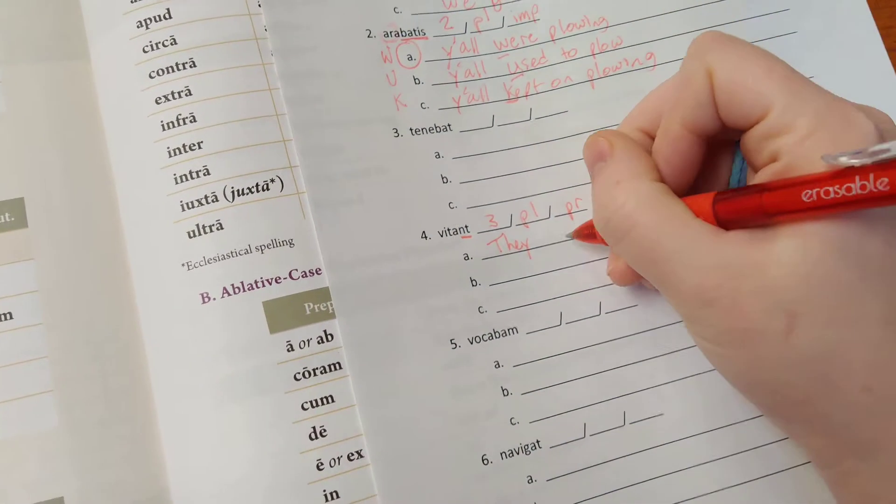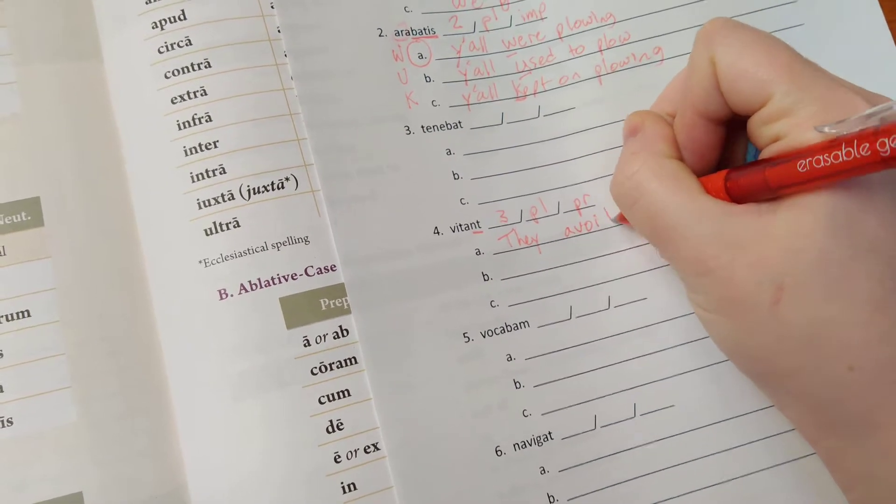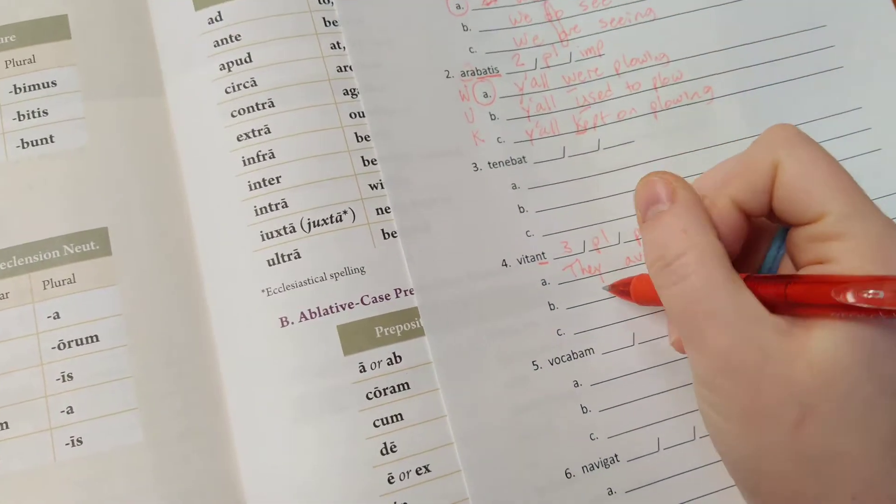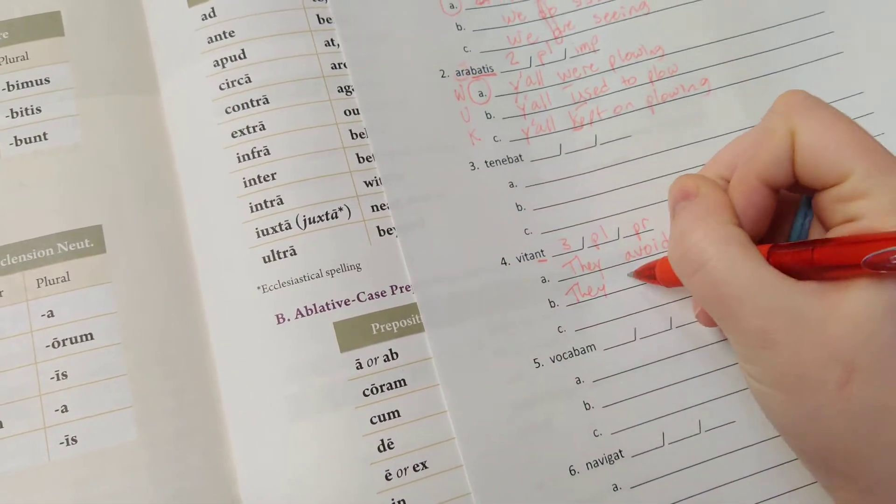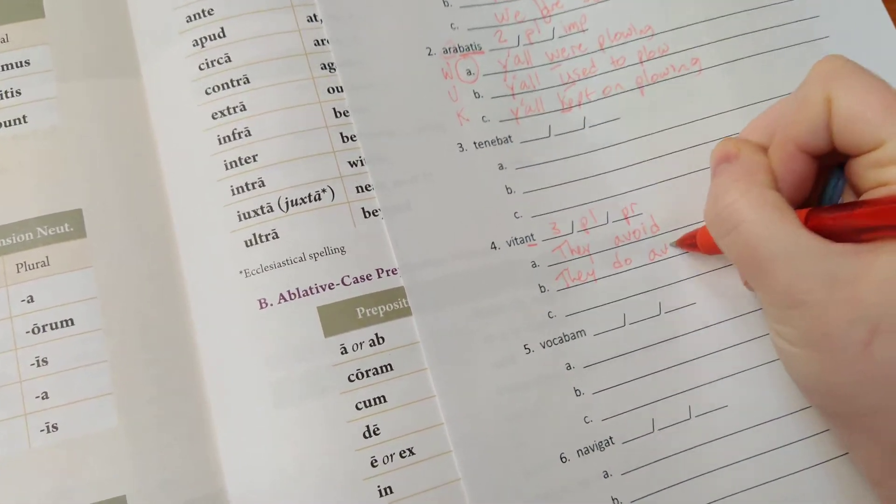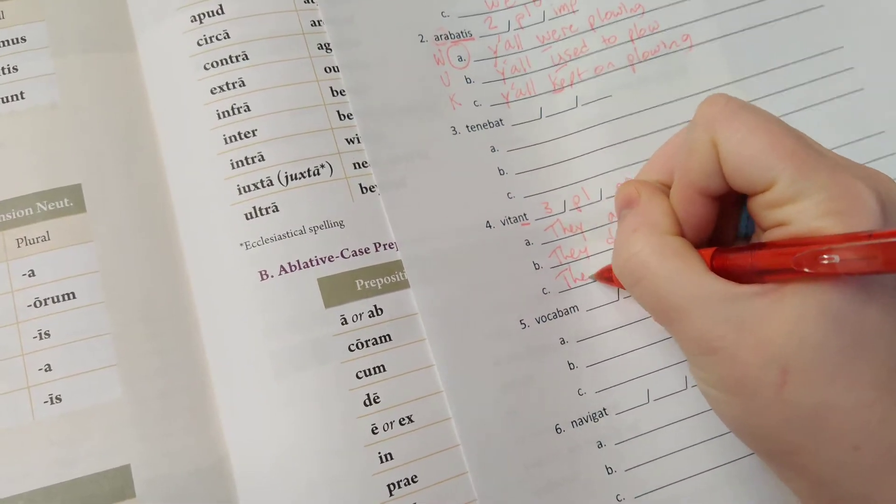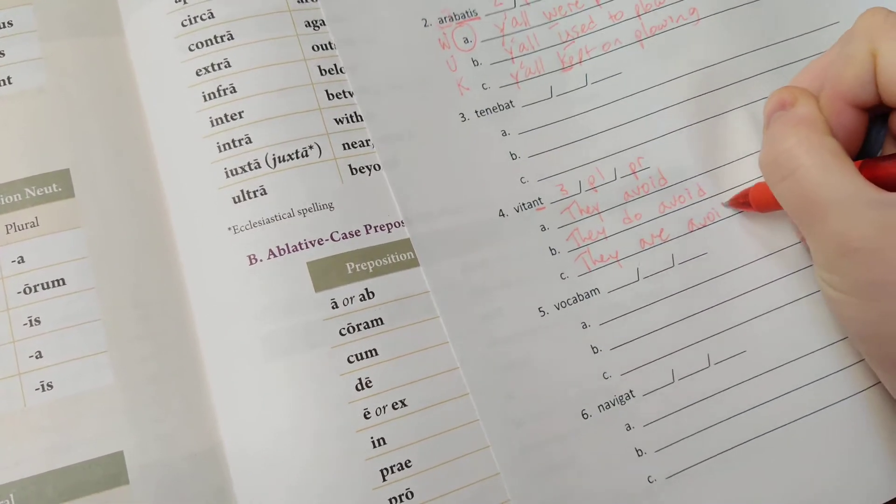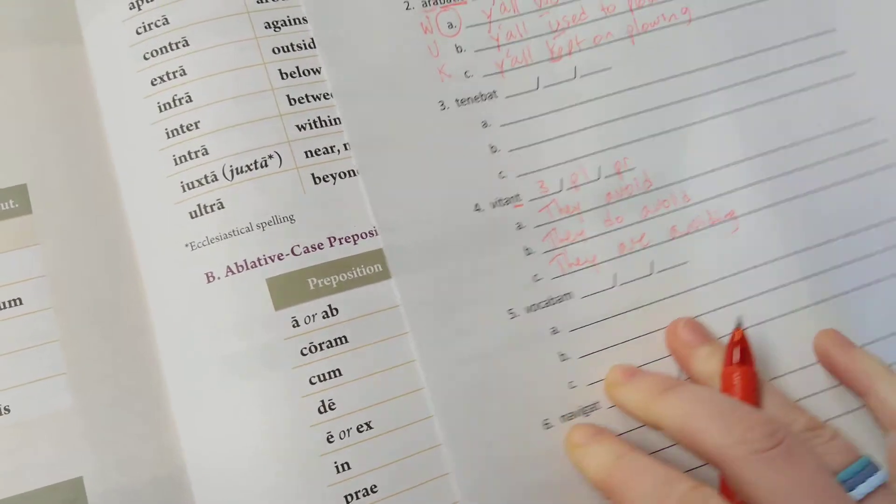Vita comes from vito, vitare, vitavi, vitatum. So it's they avoid. And then remember our acronym to remember the others is DA. They do avoid, or they are avoiding.